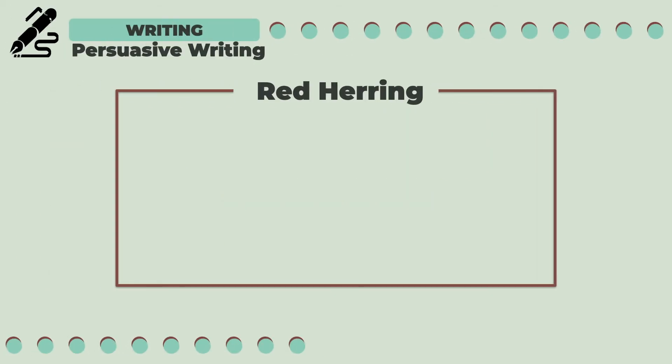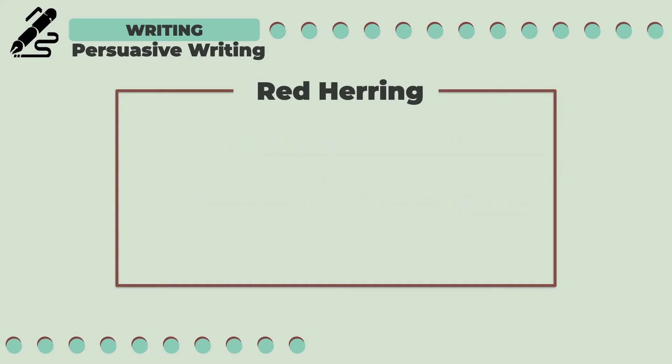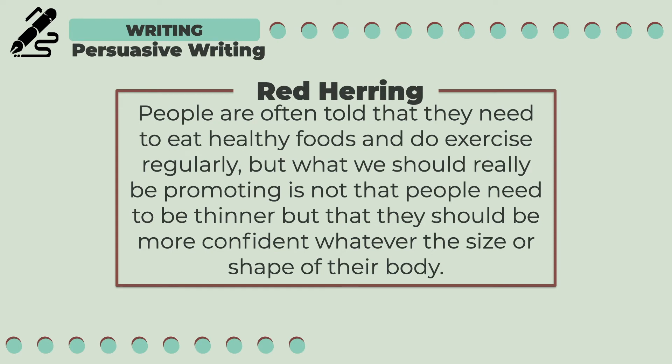The second type of logical fallacy is red herring. This is when the writer begins discussing an idea that avoids the key issues and distracts the audience from it. For example: "People are often told that they need to eat healthy foods and do exercise regularly. But what we should really be promoting is not that people need to be thinner, but that they should be more confident whatever the size or shape of their body." In this example, the topic is about eating healthy foods and doing exercise regularly; however, the next clauses focus on being confident with body size, departing from the topic sentence, which is to eat healthy.